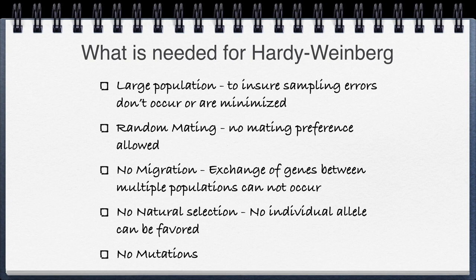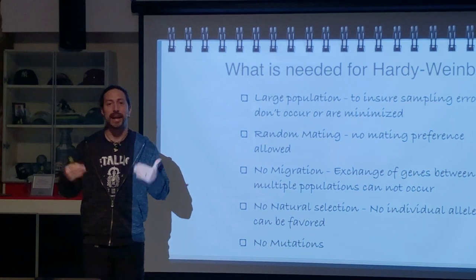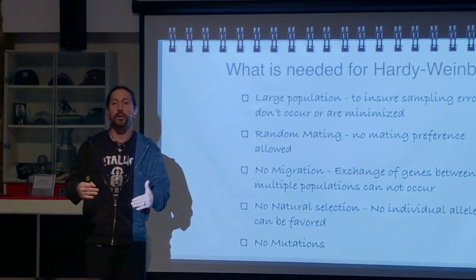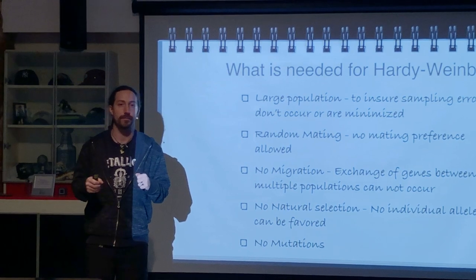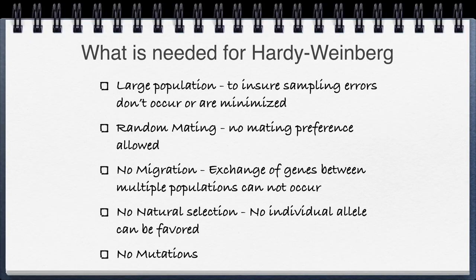Now let's look at what requirements are needed for the Hardy-Weinberg equation to work. First, it requires an extremely large population — when counting individuals you can make errors called sampling error, so a large population minimizes that. Second, mating must be random. Organisms can't choose their mates; if they do, there could be a preference for certain alleles or traits, which Hardy-Weinberg cannot accommodate.